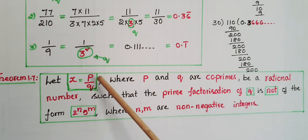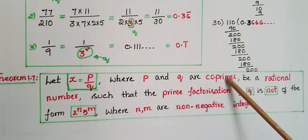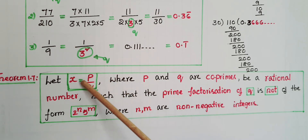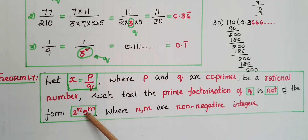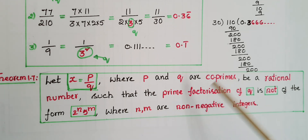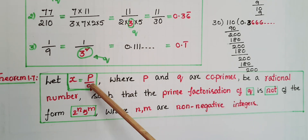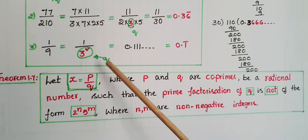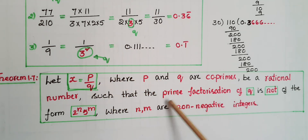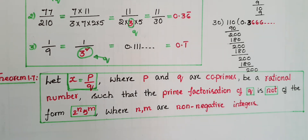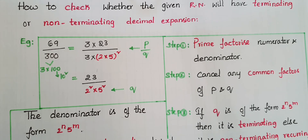We can say: let x equal p by q where p and q are co-primes be a rational number. If the prime factorization of q is not of the form 2 to the power of n into 5 to the power of m, where n and m are non-negative integers, then x is a non-terminating recurring or repeating rational number. For these rational numbers, the denominator is not in the form 2 to the power of n into 5 to the power of m.